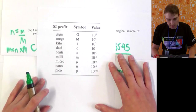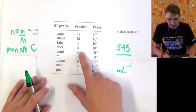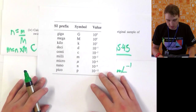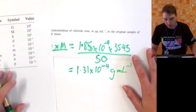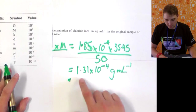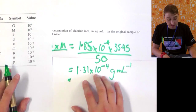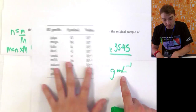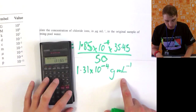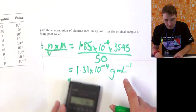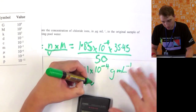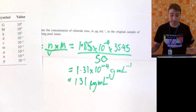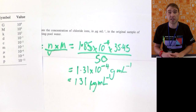From the SI prefix sheet provided at the start of the exam, micro means times 10⁻⁶. So to convert from grams to micrograms, we divide 1.31 × 10⁻⁴ by 10⁻⁶, giving 131 micrograms per millilitre. So the concentration of chloride ions in the swimming pool water is 131 µg/mL. That's the complete back titration example — that's the end of Flippin' Science for today. I hope that wasn't too confusing. See ya!